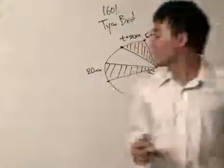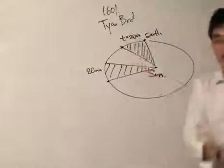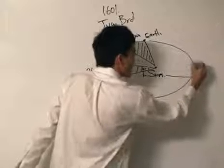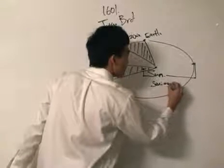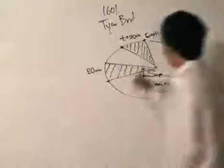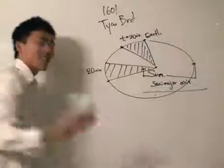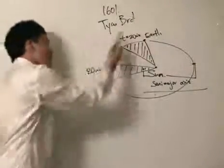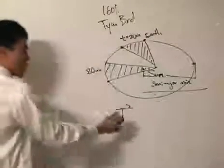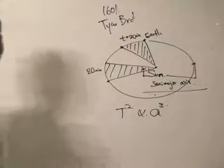Kepler's third law says that the square of the period of a planet's revolution around its orbit is proportional to the cube of the semi-major axis of the elliptical orbit. To repeat: first law — a planet moves in an elliptical orbit around the sun; second law — a line segment from the planet to the sun sweeps out equal areas in equal time intervals; third law — the square of the period of revolution is proportional to the cube of the semi-major axis.